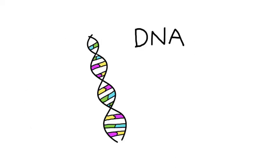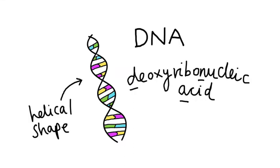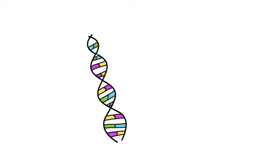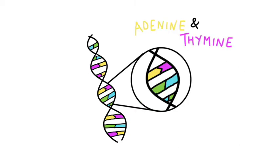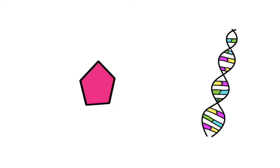This is DNA, deoxyribonucleic acid. It has two polynucleotide strands that are connected by hydrogen bonds of complementary base pairs. Adenine pairs with thymine and guanine pairs with cytosine. The subunits of DNA are formed of a pentose sugar, deoxyribose,